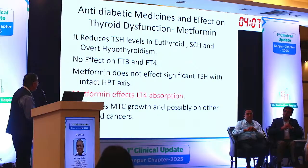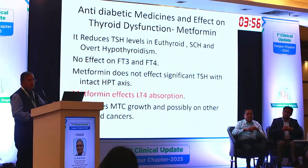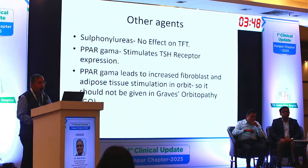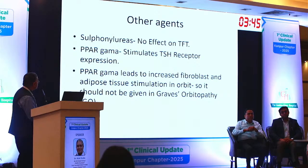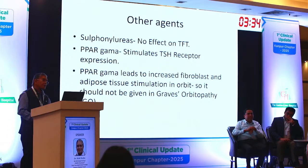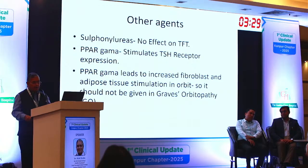Metformin reduces medullary thyroid carcinoma growth and possibly other thyroid cancers, so it has a protective role. Sulfonylureas have no effect on thyroid function tests. PPARγ agonists, especially pioglitazone, stimulate TSH receptor expression, leading to increased fibroblast and adipose tissue stimulation in the orbit — so pioglitazone should not be given in Graves' orbitopathy. If there is thyrotoxicosis and diabetes, avoid giving glitazones.